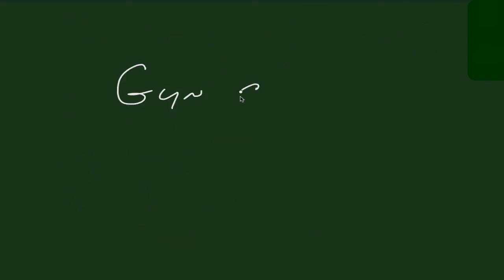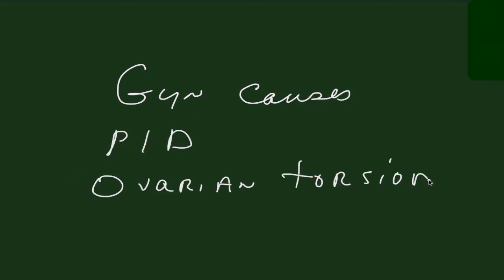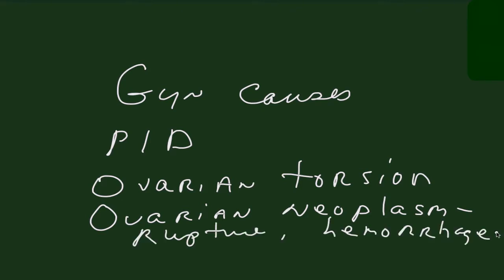Gynecologic causes include pelvic inflammatory disease, ovarian torsion, and ovarian neoplasms which hemorrhage or rupture.